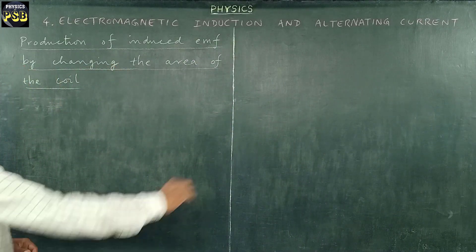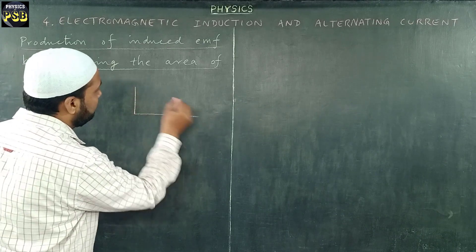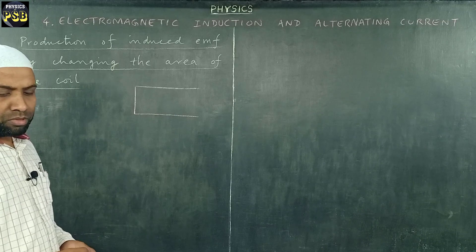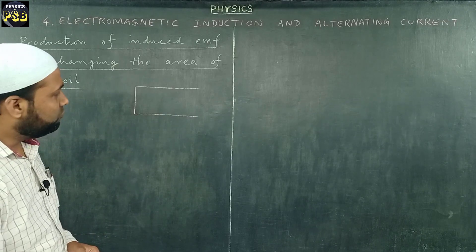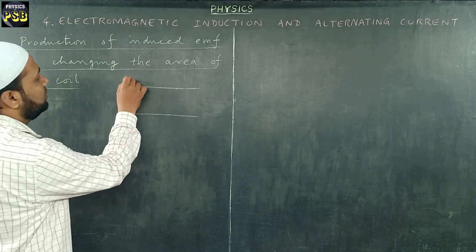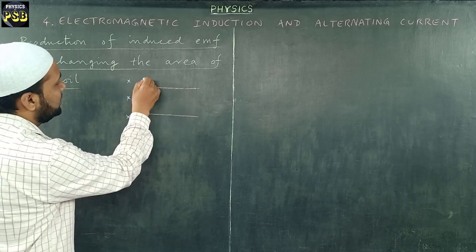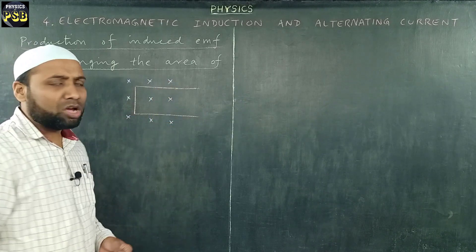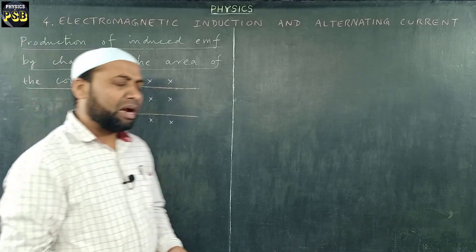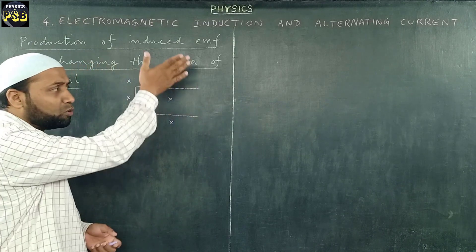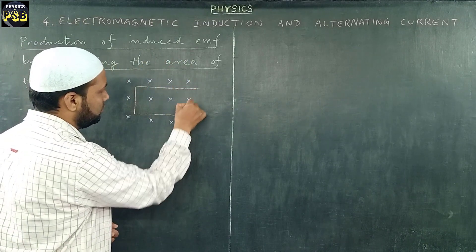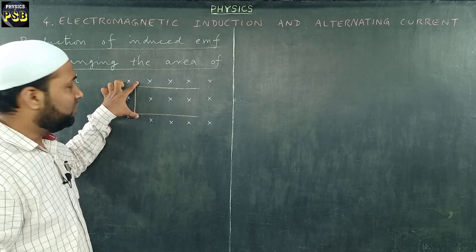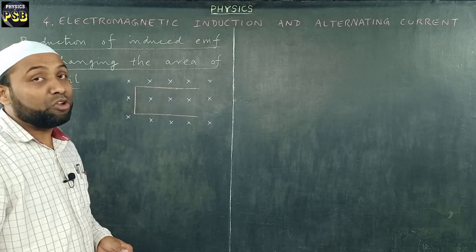I take a rectangular metal frame which appears something like this, and this metal frame is fixed in a uniform magnetic field represented by these crosses. As I told you earlier, the crosses represent that the magnetic field goes inward, perpendicular to the plane of the board. So here I have a rectangular metal frame fixed in a perpendicular uniform magnetic field.